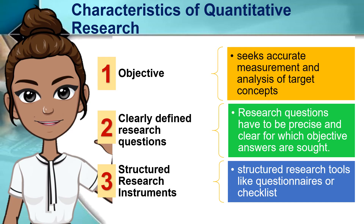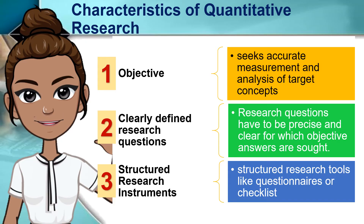The characteristics of quantitative research are: objective, clearly defined research questions, and structured research instruments. First, objective: quantitative research seeks accurate measurement and analysis of target concepts. It is not based on mere intuitions and guesses. Data are gathered before proposing a conclusion or solution to a problem. Second, clearly defined research questions: in quantitative research, the researchers know in advance what they are looking for. The research questions are well defined, for which objective answers are sought. All aspects of the study are carefully designed before data are gathered.